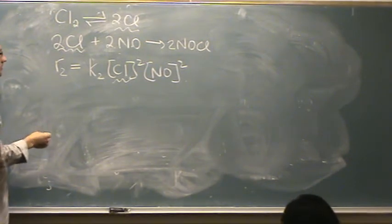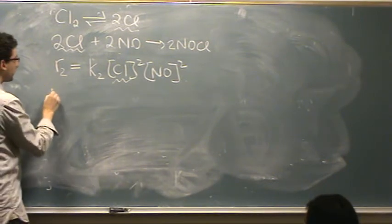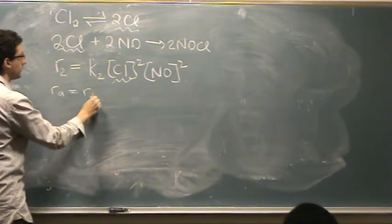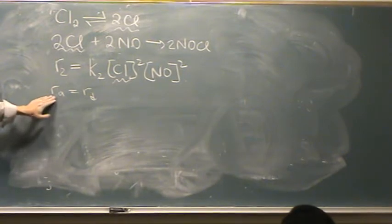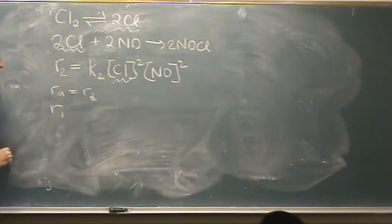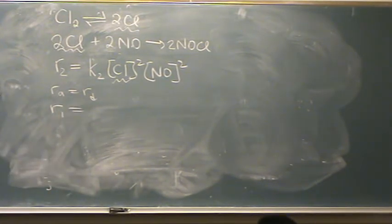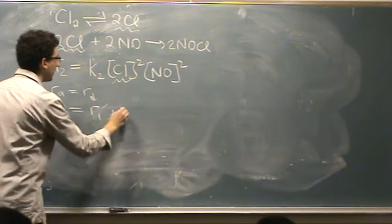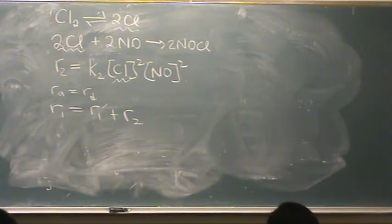When we don't know what the slow step is, we'll use PSSH and say the rate of appearance of my intermediate equals the rate of disappearance. So, where is Cl produced? The first reaction forward, rate 1. Everywhere else it disappears — in rate 1 reverse and in rate 2.